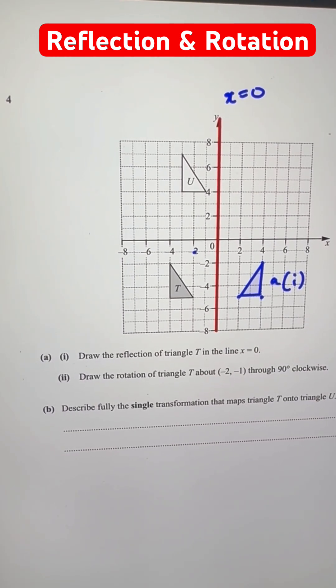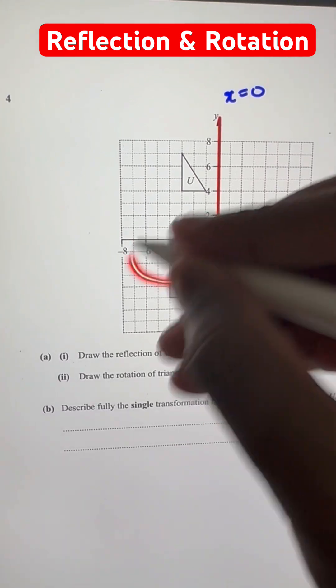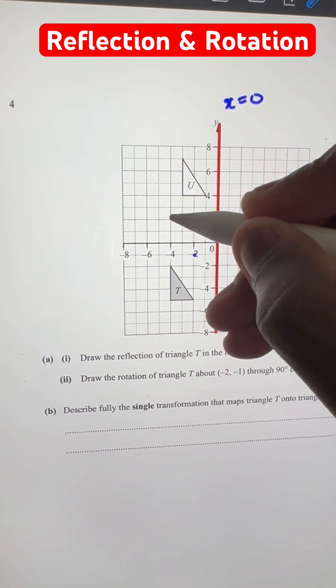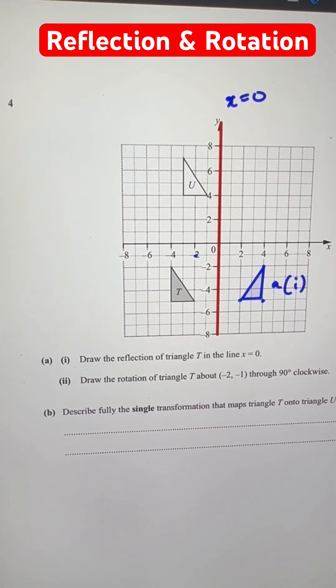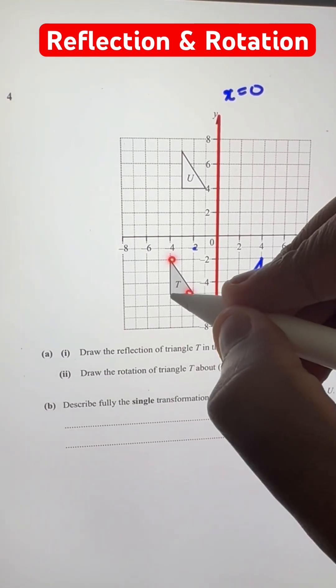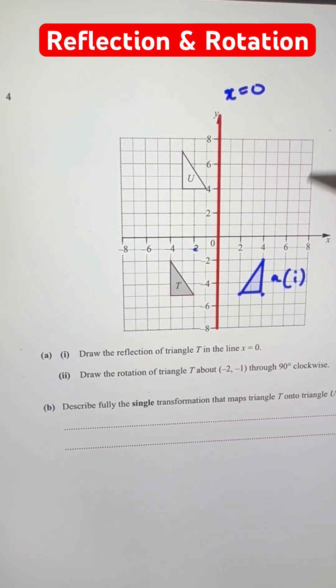So going 90 degrees clockwise means we're going in this direction. At 90 degrees, that means the triangle will be flipped to something like this. Now we just need to find the points where it's rotated. So let's take each of the three points, rotate them 90 degrees clockwise separately.